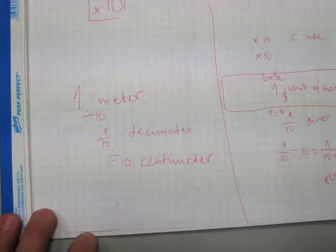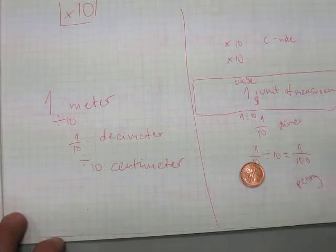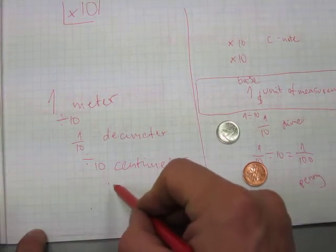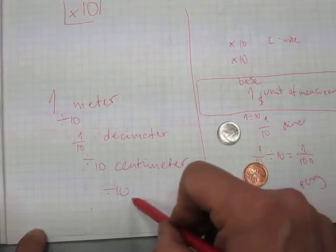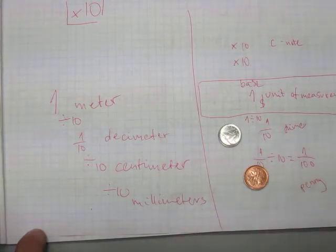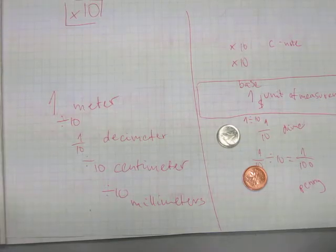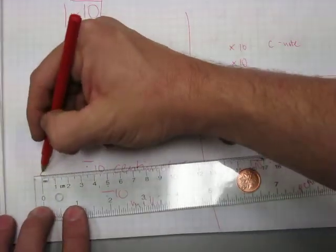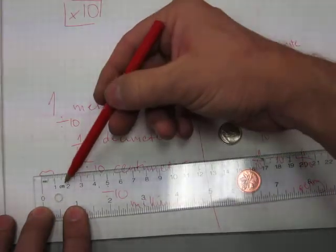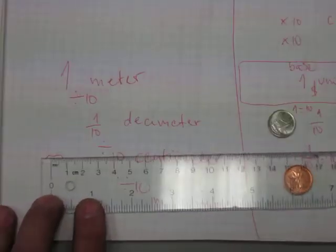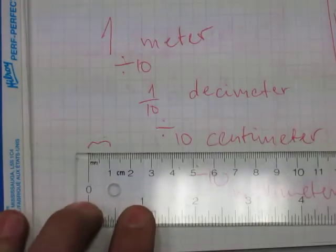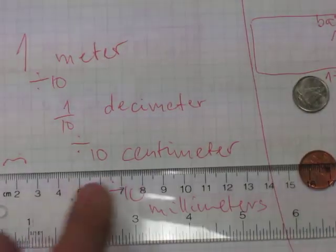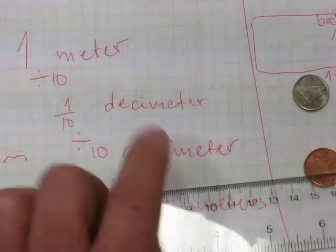Just as 10 pennies make a dime, 10 centimeters make a decimeter. We can downscale further by another factor of 10 and we'll get millimeters. Here on a ruler you can see 10 of these millimeters make a centimeter — let me zoom in a little. About 10 millimeters make a centimeter, 10 centimeters make a decimeter, and 10 decimeters make a meter.